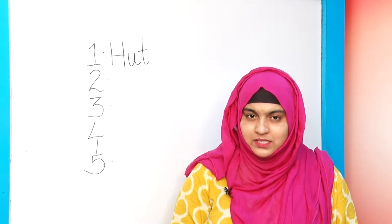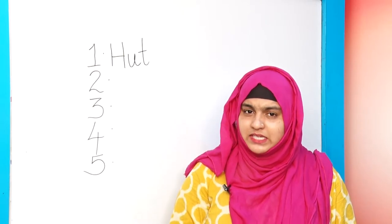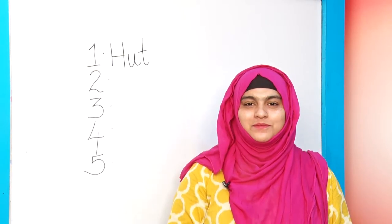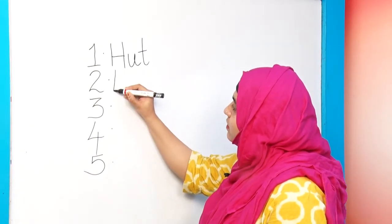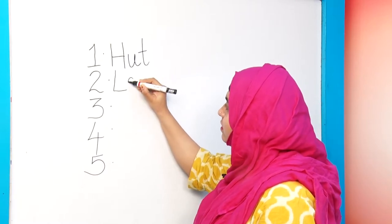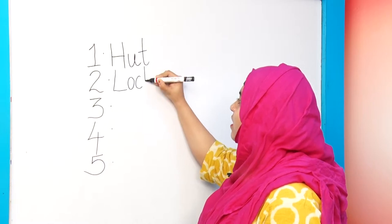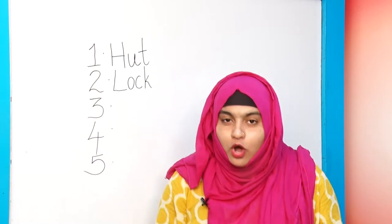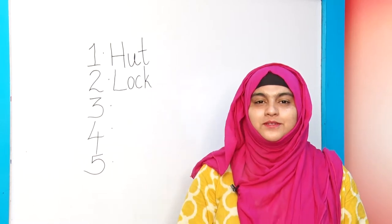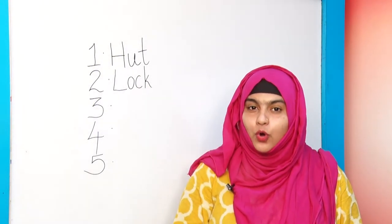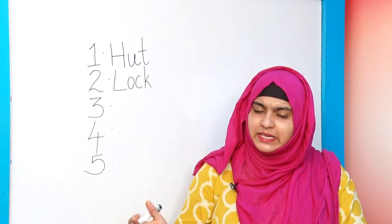The hut is made of straws. The hut is small. The second word is L-O-C-K — lock, lock, lock. The lock is golden.